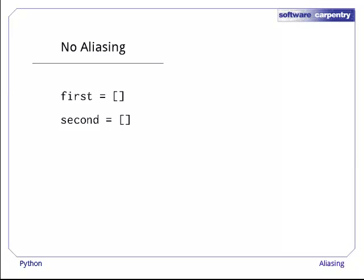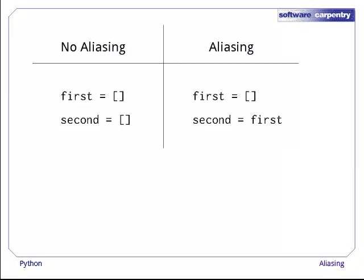The root of the problem is that empty square brackets always mean a new empty list, but if we assign one variable's value to another variable, we're telling Python to create an alias for whatever the first variable was pointing at.